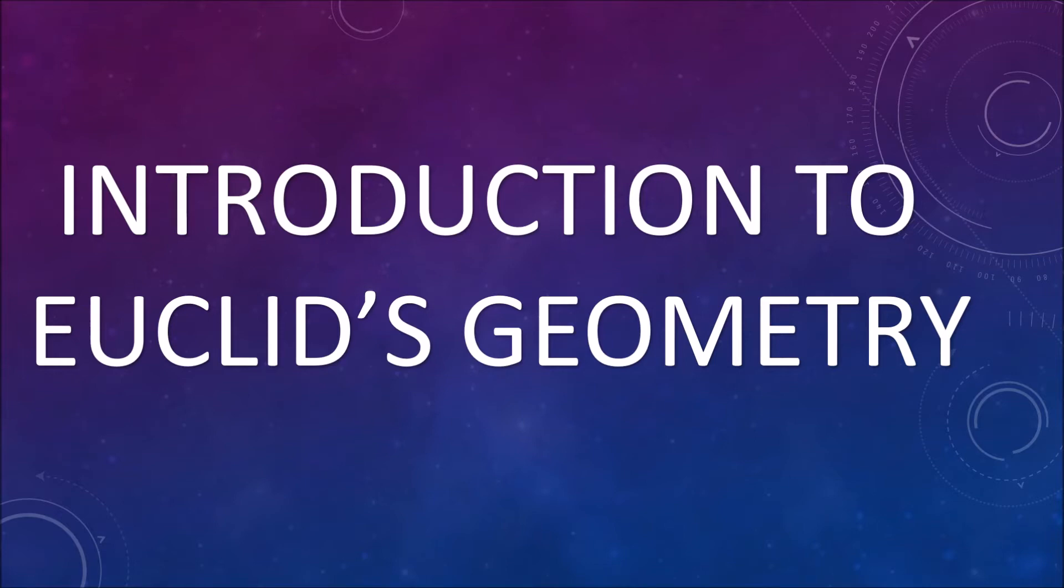geo, means the earth, and metrian, means to measure. So it appears to have originated from the need for measuring land. Euclid was a mathematics teacher. He was born in Alexandria in Greece. He introduced the method of